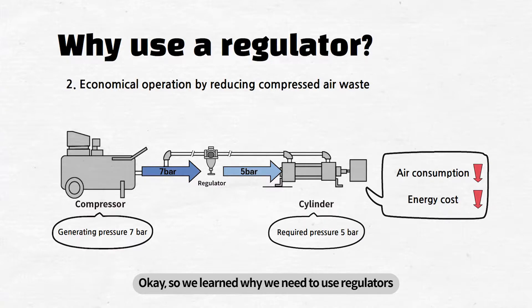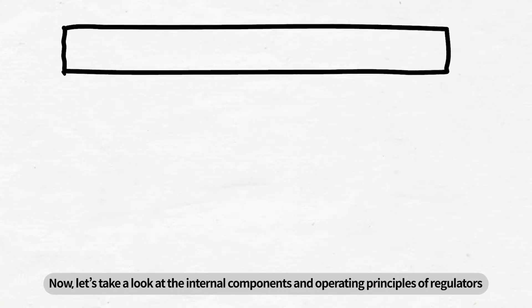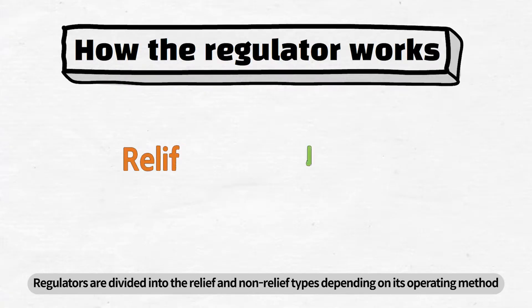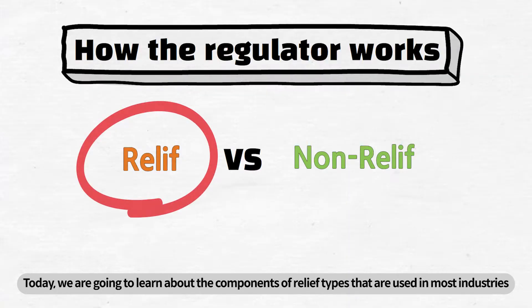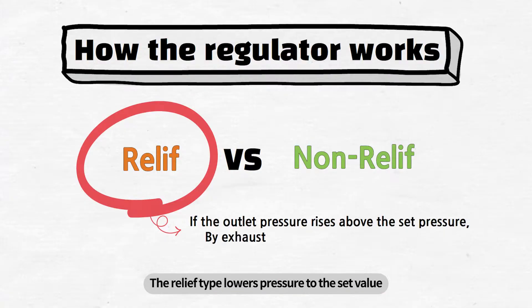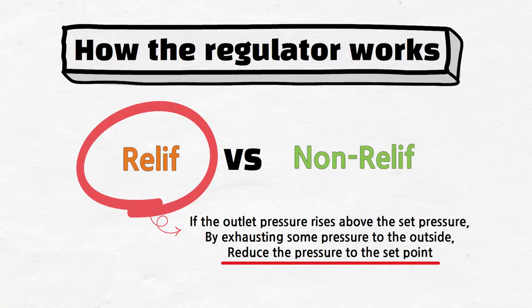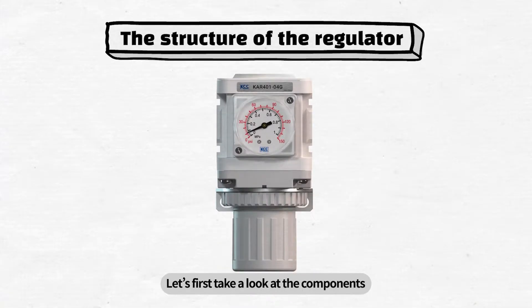So we learned why we need to use regulators. Now let's take a look at the internal components and operating principles of regulators. Regulators are divided into the relief and non-relief types depending on their operating method. Today, we are going to learn about the components of relief types that are used in most industries. The relief type lowers pressure to the set value by discharging the pressure that is in excess of that set in the outlet pressure.